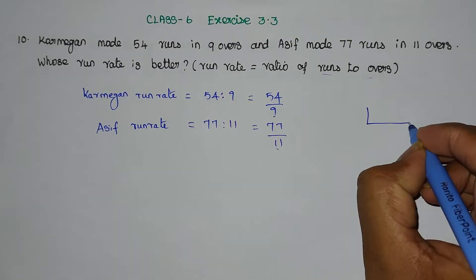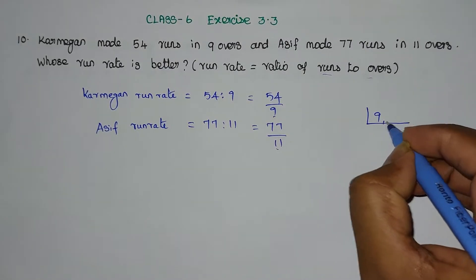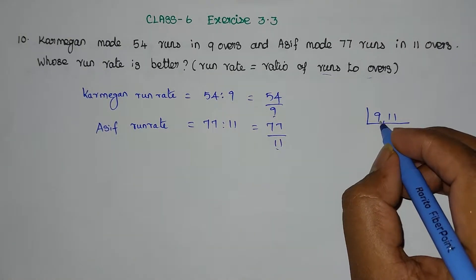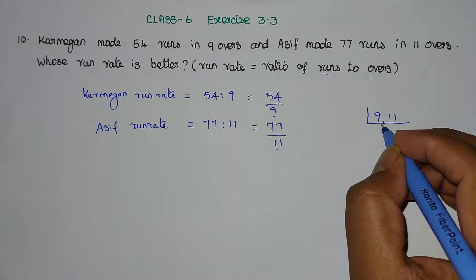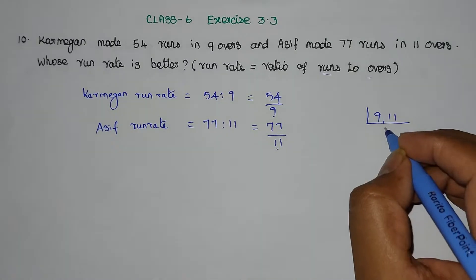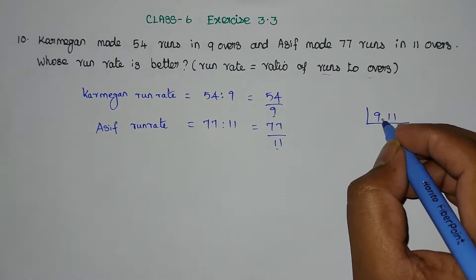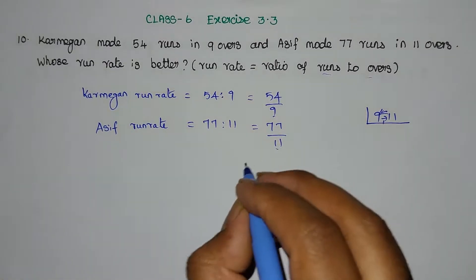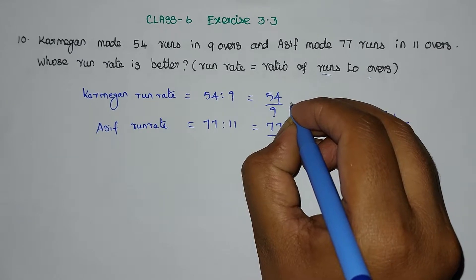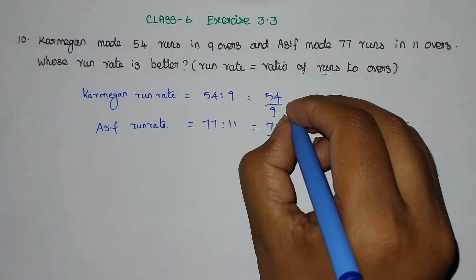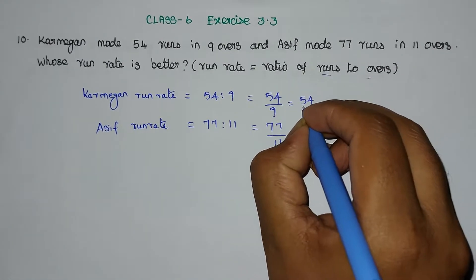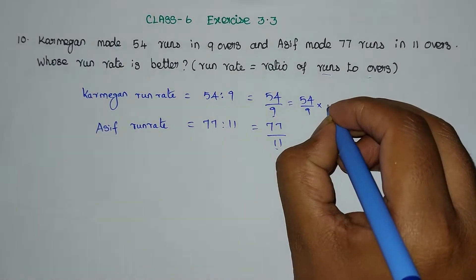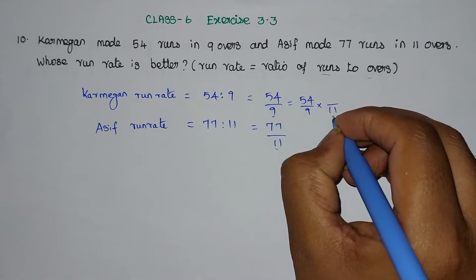What do we do? We check the denominators: 9 and 11. To make them common, we multiply them together. We multiply each numerator with the opposite denominator.